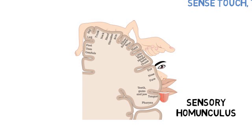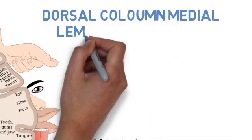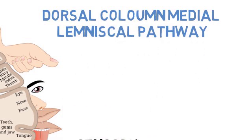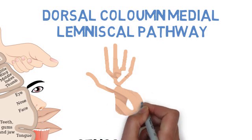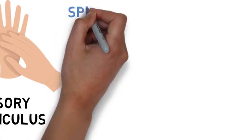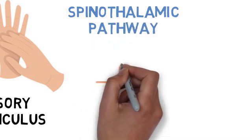Somatic sensory information travels to the brain via specific pathways. One of them is the dorsal column-medial lemniscal pathway, which carries signals for fine touch, vibration, and proprioception. Another one of these pathways is the spinothalamic pathway, which transmits signals for pain, temperature, and crude touch.